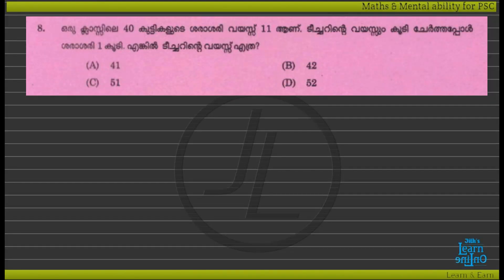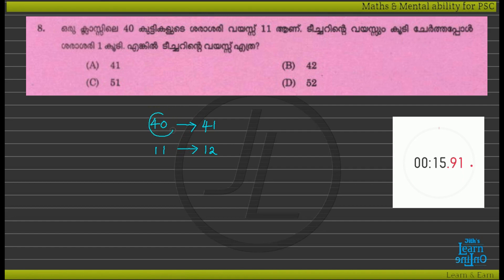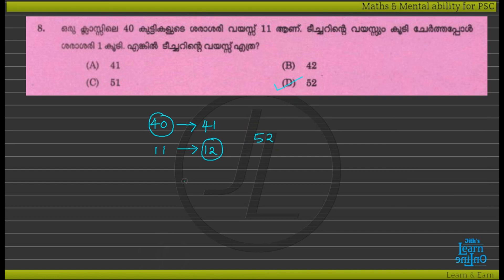We have a 40-year-old teacher in a class. They have a 42-year-old teacher, and that should help cancel out the average of 42. To map this, you will have prepared many teachers in class — let's get started.